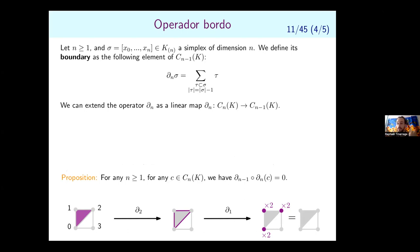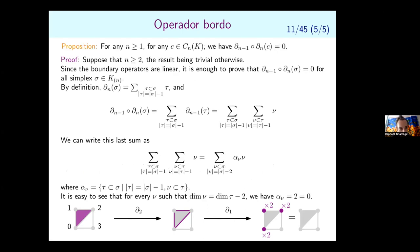A key general fact: applying the boundary operator twice always gives zero — ∂∘∂ = 0. The proof is simple: writing out the double boundary, every simplex appears with a factor of two, and two equals zero in Z/2Z.